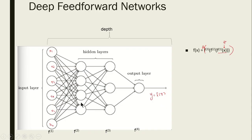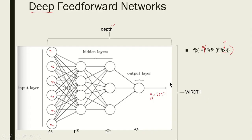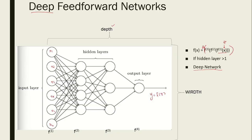The number of layers in the network is called the depth, and the word 'deep' in deep learning comes from this concept. The number of neurons in each layer is called the width of the network. When the number of hidden layers is greater than one, we call it a deep neural network.